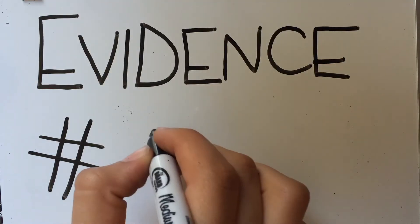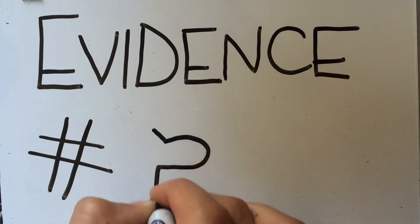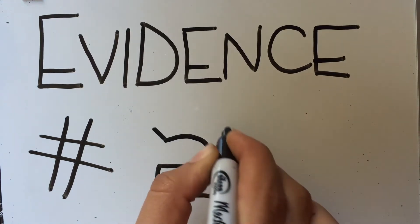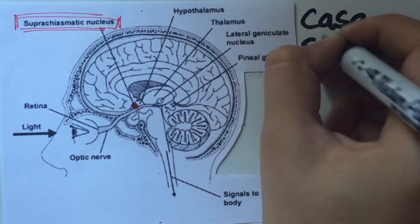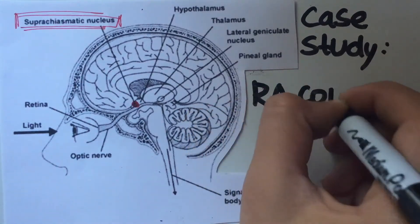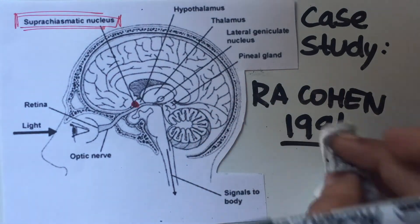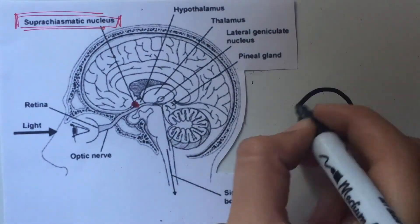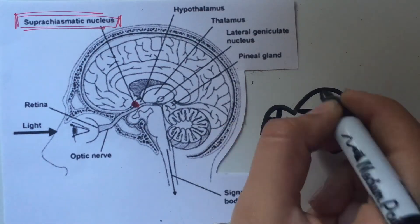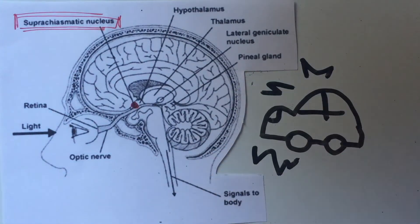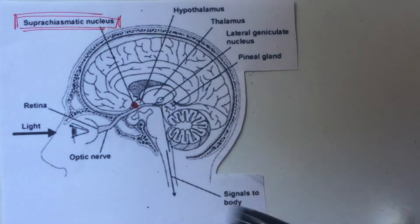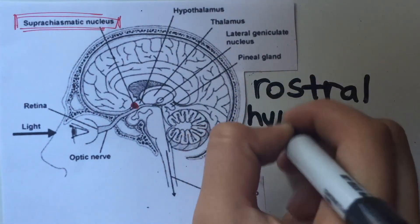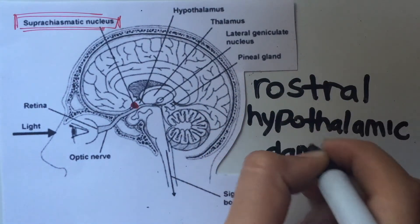Moreover, we can find evidence of the role of the suprachiasmatic nucleus in circadian rhythms with a case study by R.A. Cohen in 1991. He had a patient that, after a car accident, reported rostral hypothalamic damage that disrupted his sleep-wake cycle patterns, his temperature, and altered his cognitive and behavioral activity.